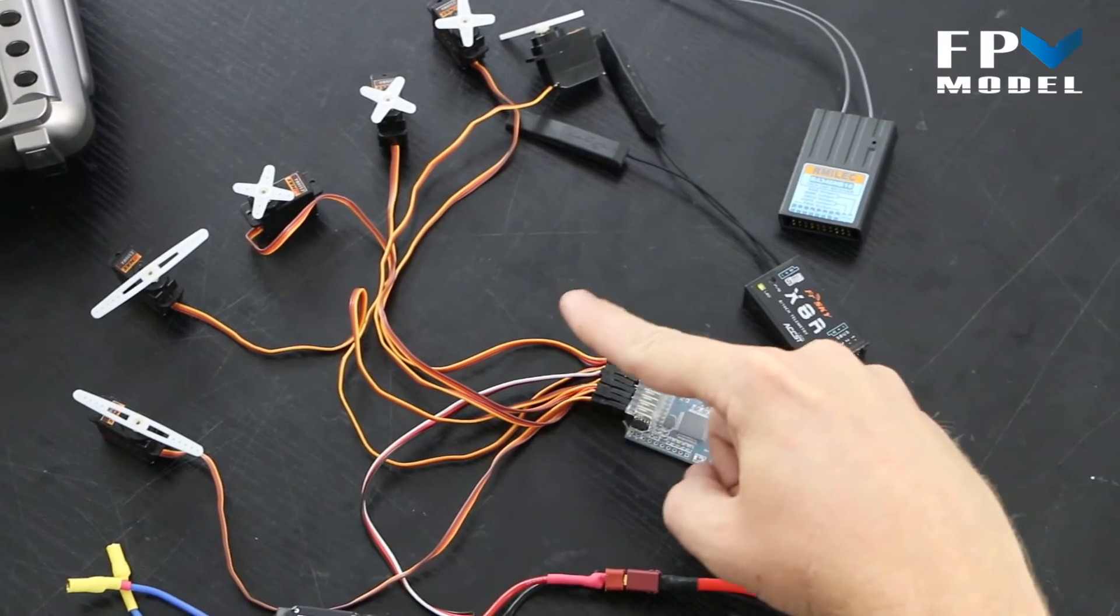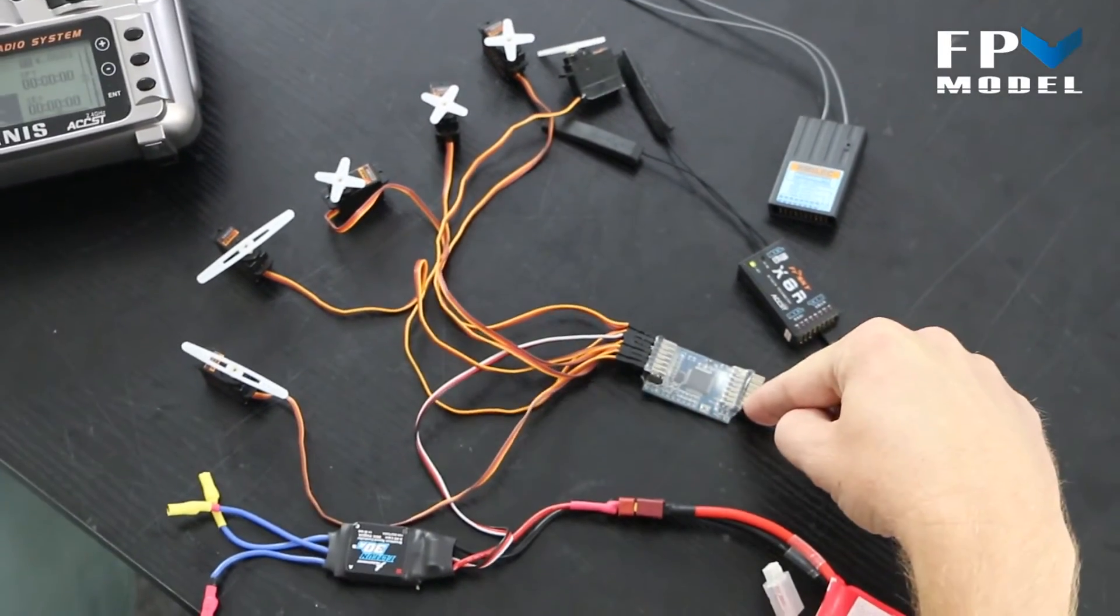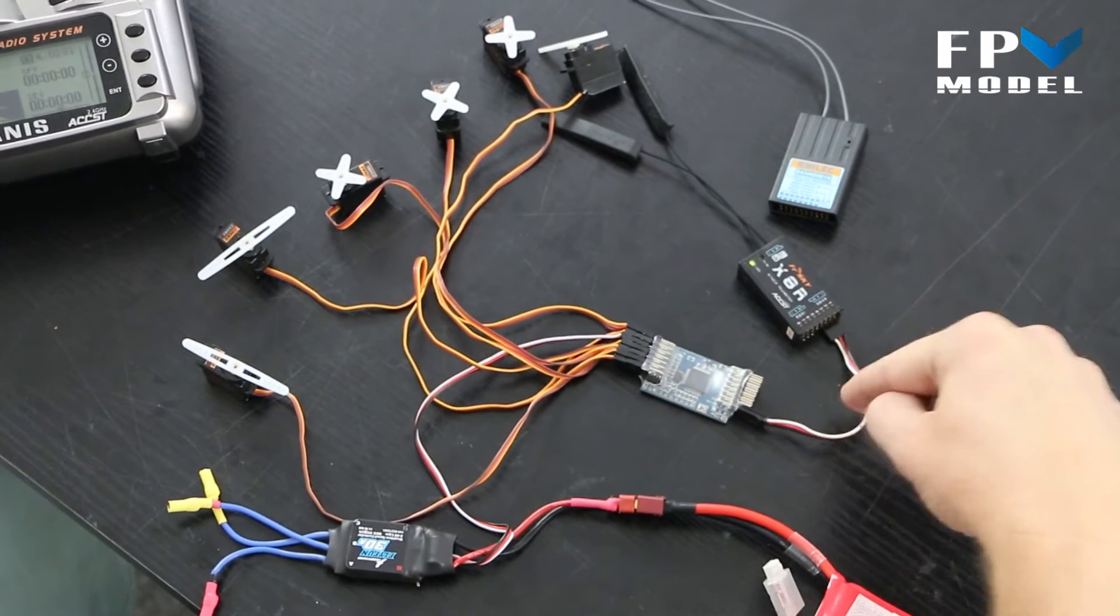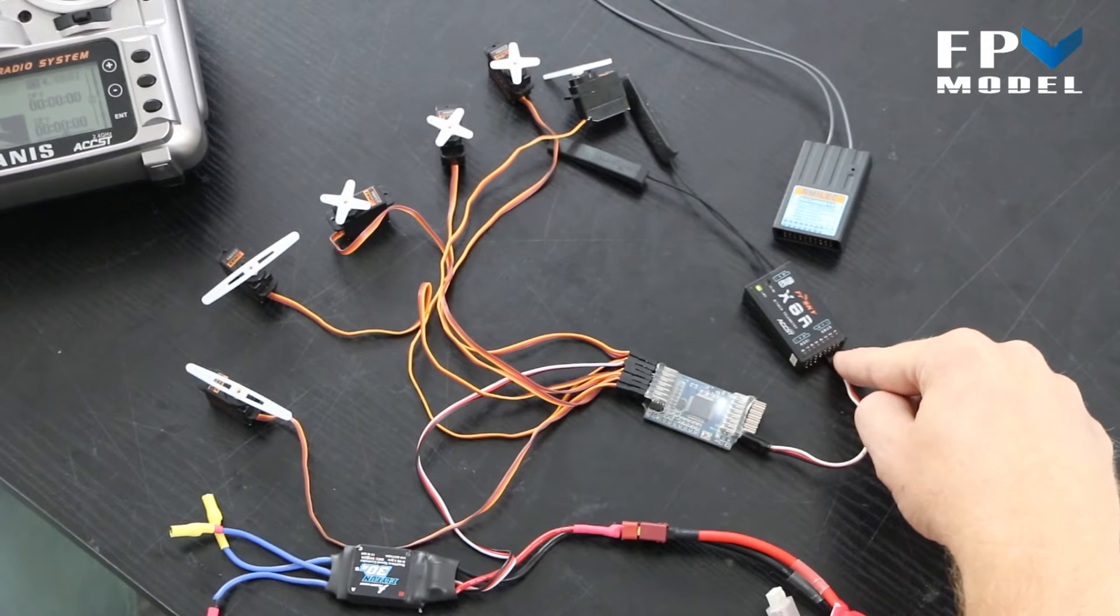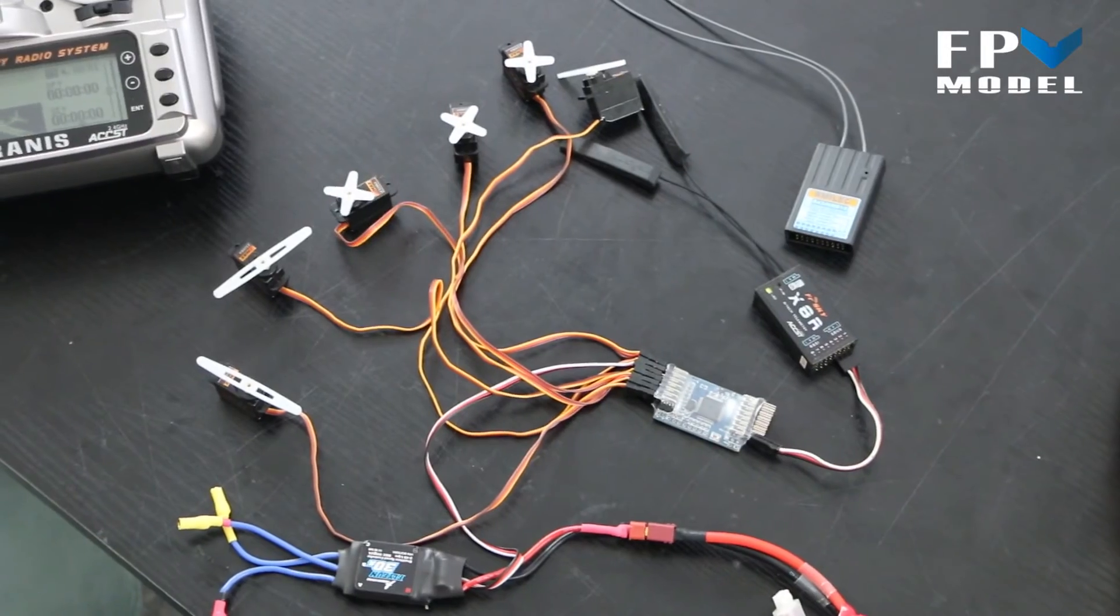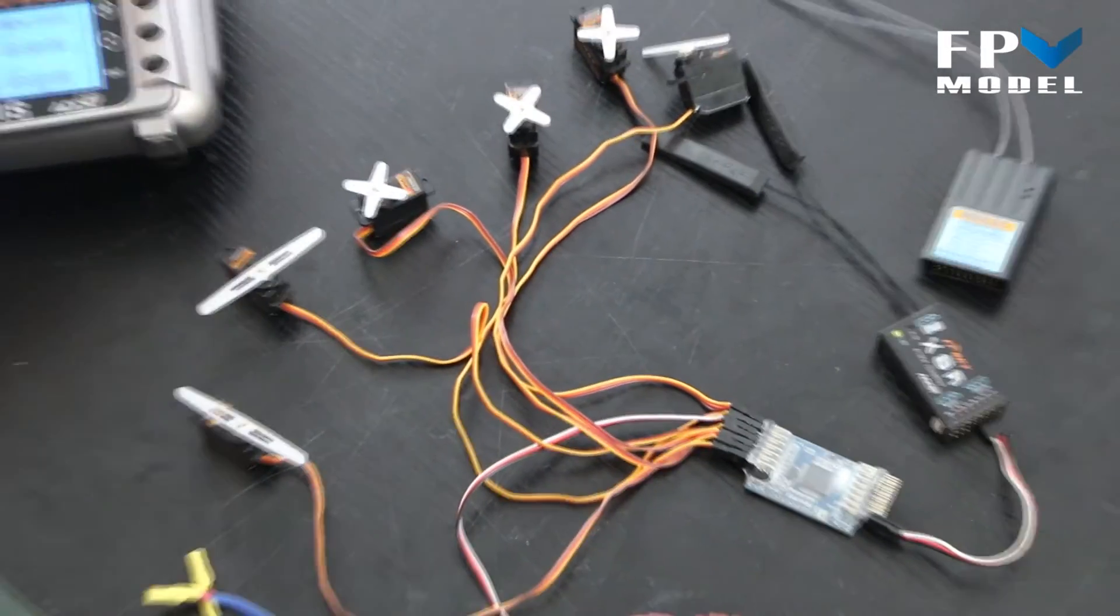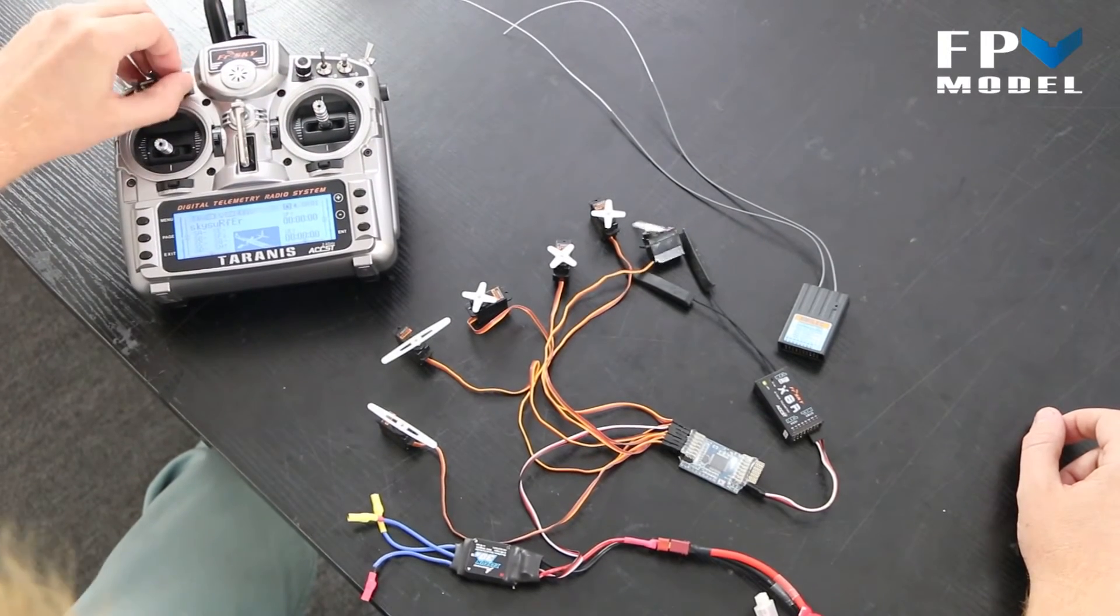So here we have six servos set up and got an ESC connected to it and then we just run the cable from the SBUS output to the SBUS input of the receiver here. And as you can see all of our channels are working with the radio.